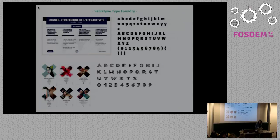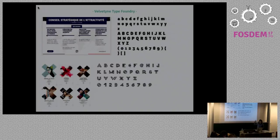I'm giving you two examples from Velveteen Type Foundry. First, you see the Femme Gardeau, which is used for the Elysée website — this is the presidential services website. And here you have the Ellement, which is used for a theater in the city of Lyon.